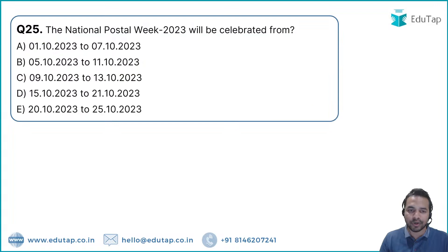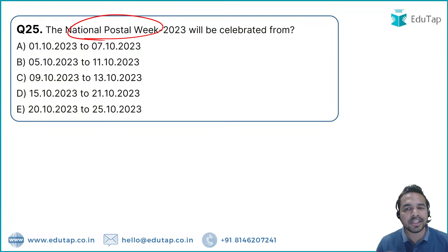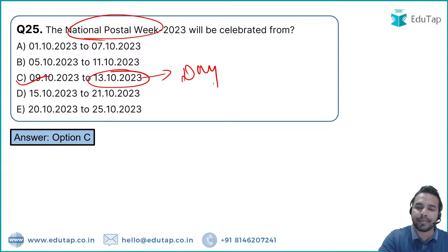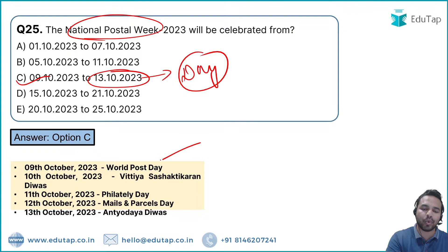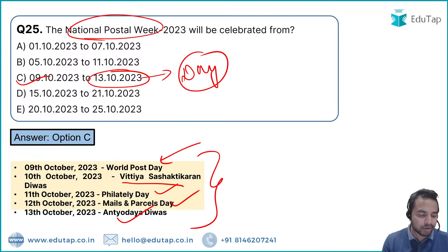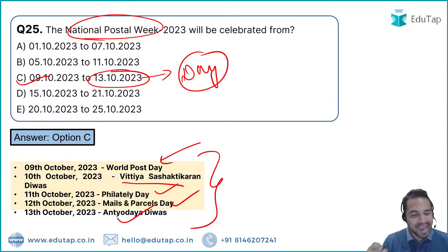Question 26: National Postal Week 2023 is celebrated from 9th to 13th October. Each day has a specific observance: 9th October — World Post Day; 10th October — Vittiya Sashaktikaran Divas; 11th October — Philately Day; 12th October — Mails and Parcels Day; 13th October — Antyodaya Divas.